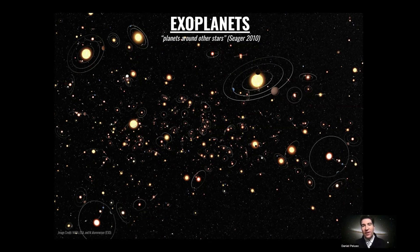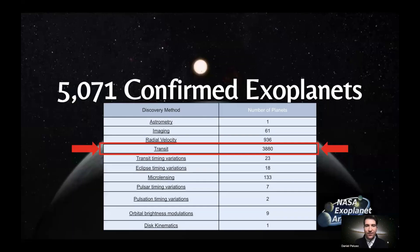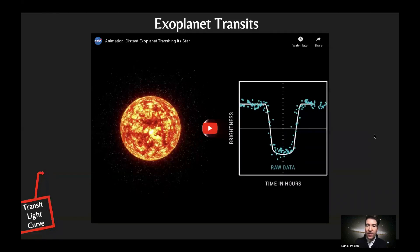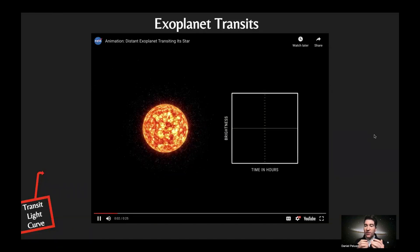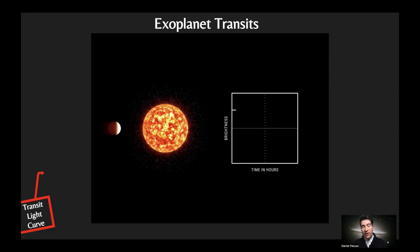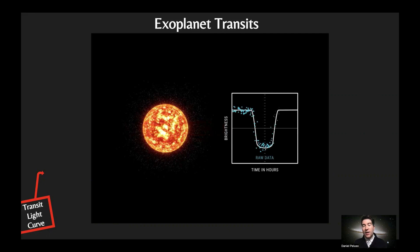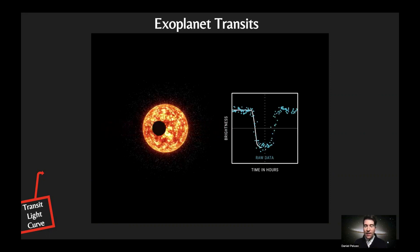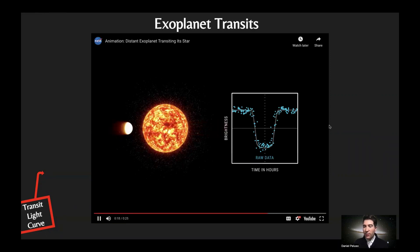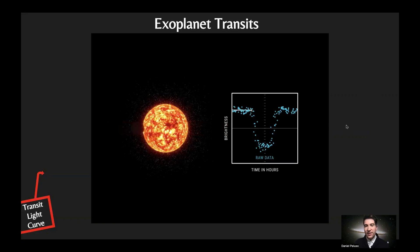So what are exoplanets? These are just planets around other stars, and to date we have over 5,000 confirmed exoplanets, most of them being found through what's called the transit method. The transit method is when we take a telescope and look at a star and look for its change in brightness over time, as you can see here in the animation. If we see a change in brightness over time, that could mean there's a planet orbiting around that star. That data gives us what's called a transit light curve, which you can see here, and which is really important for exoplanet transit science.